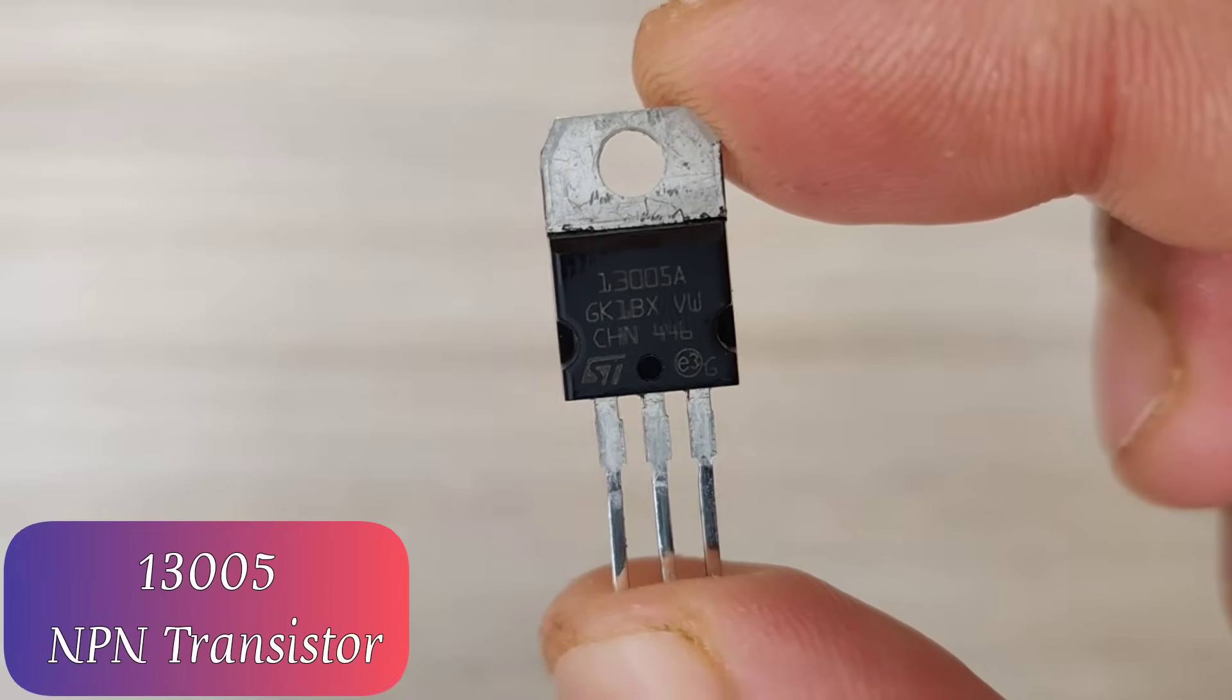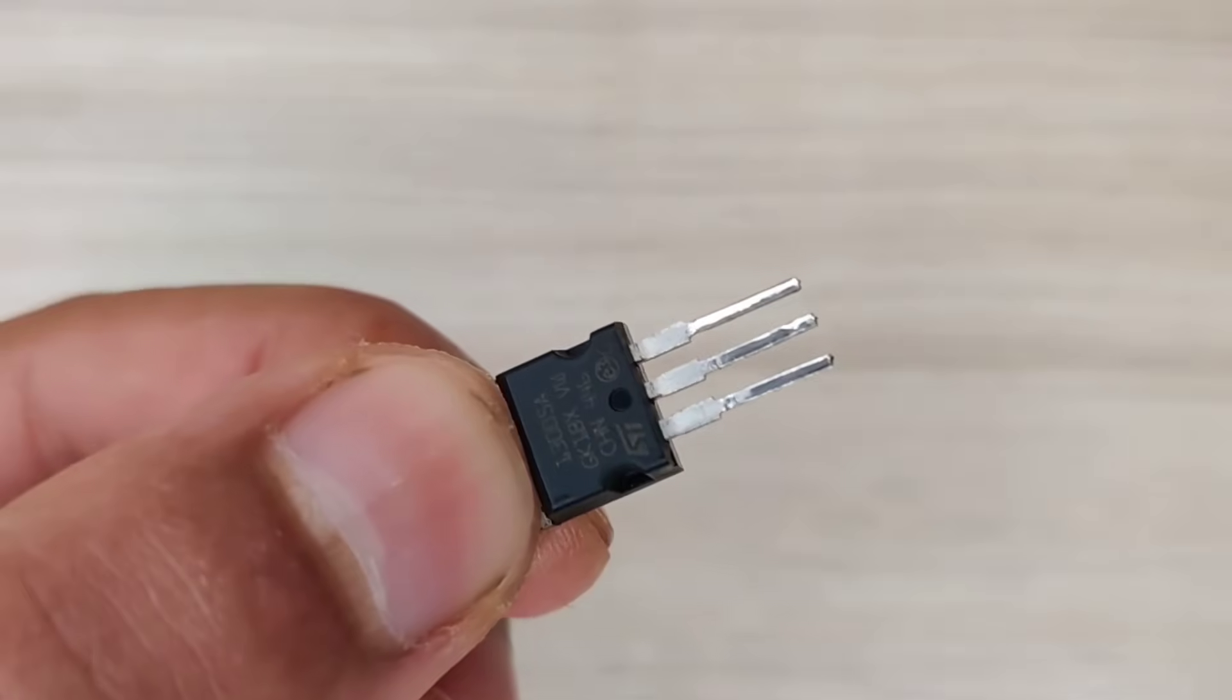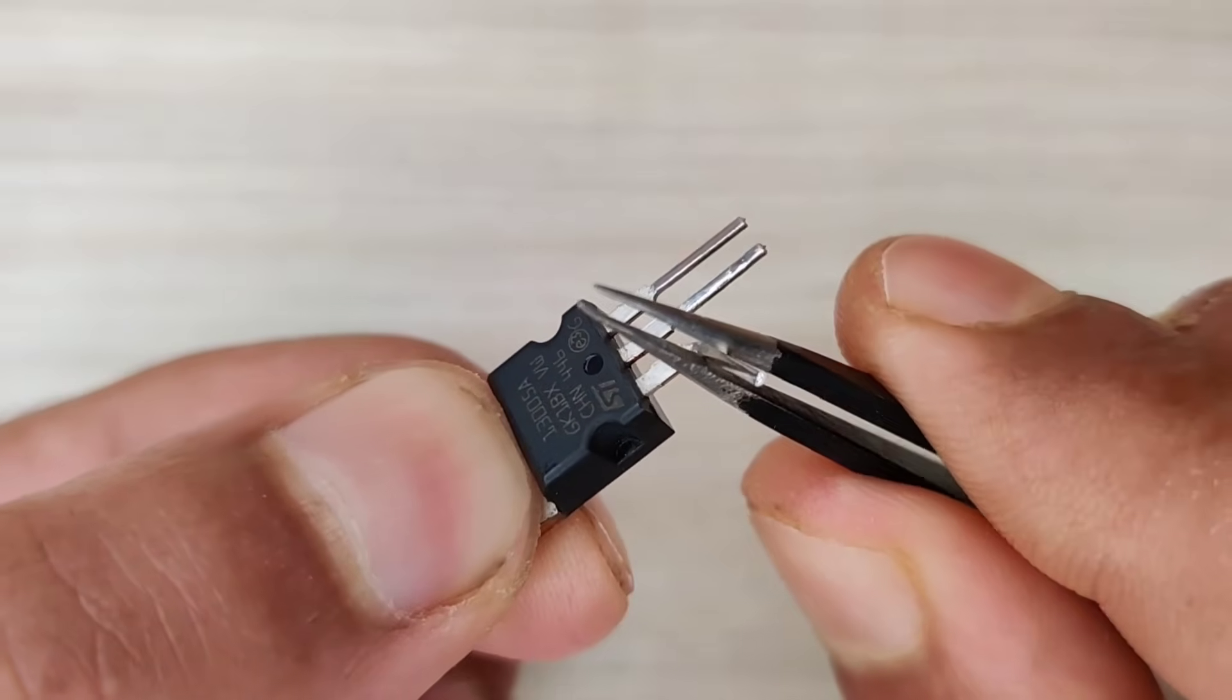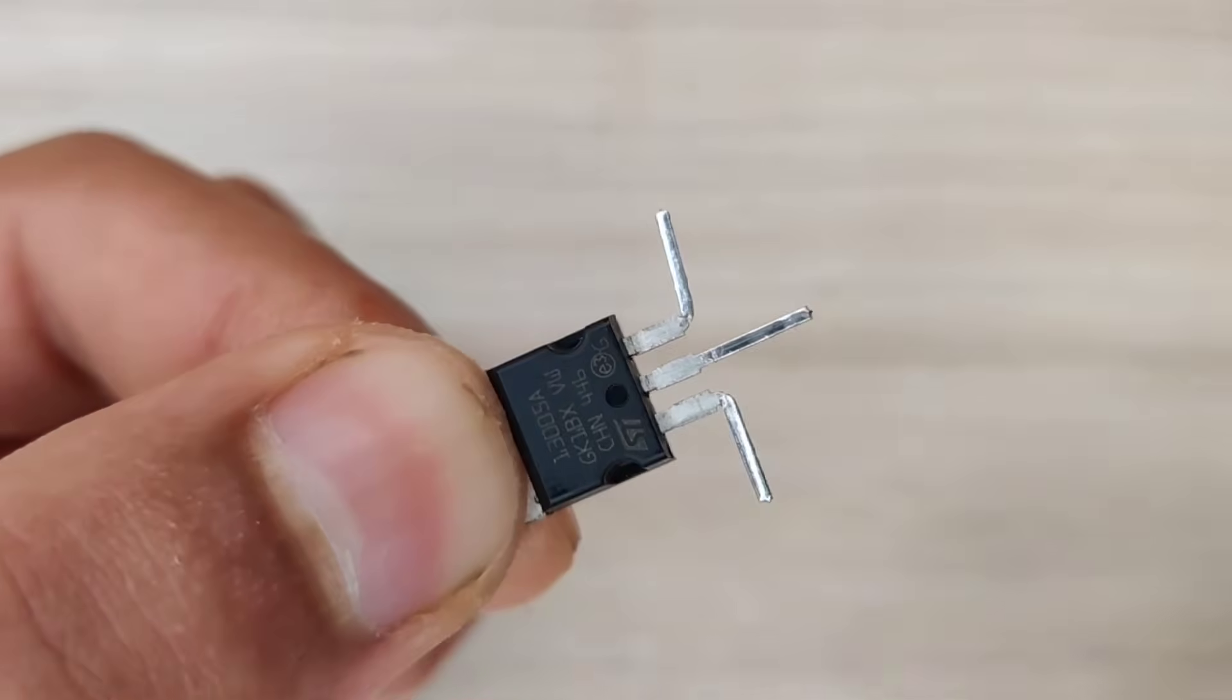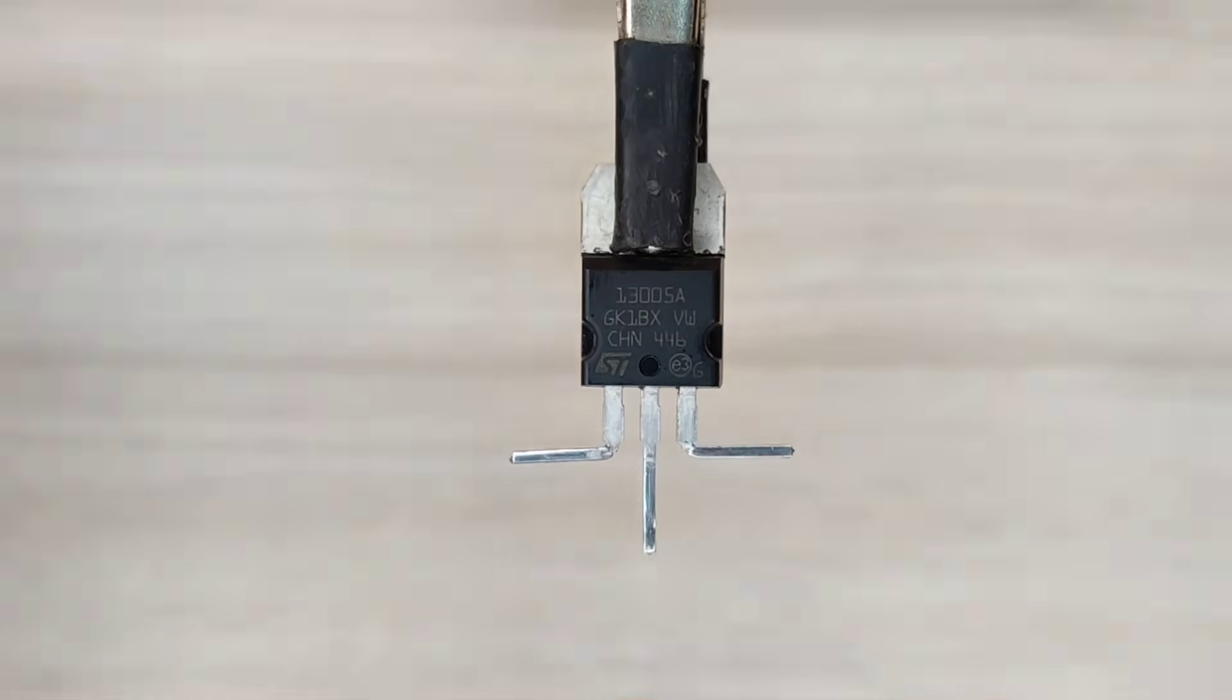Hello my friends, today in this video I will show you how to make a simple 3.7 volt lithium battery charger with auto cut off feature, and how to modify it to charge 2 to 6 batteries simultaneously.